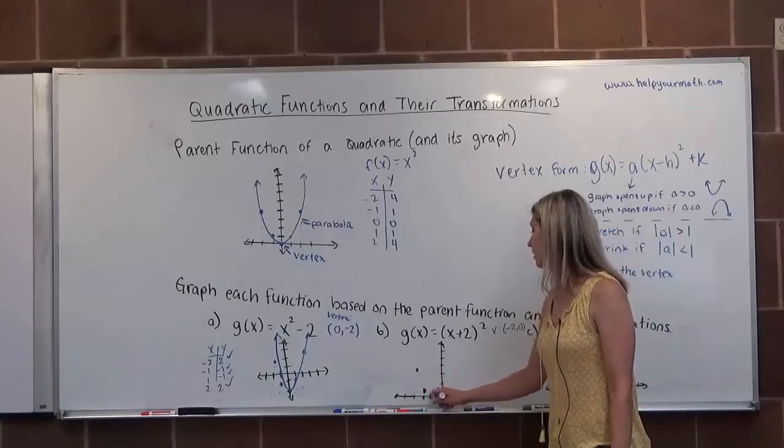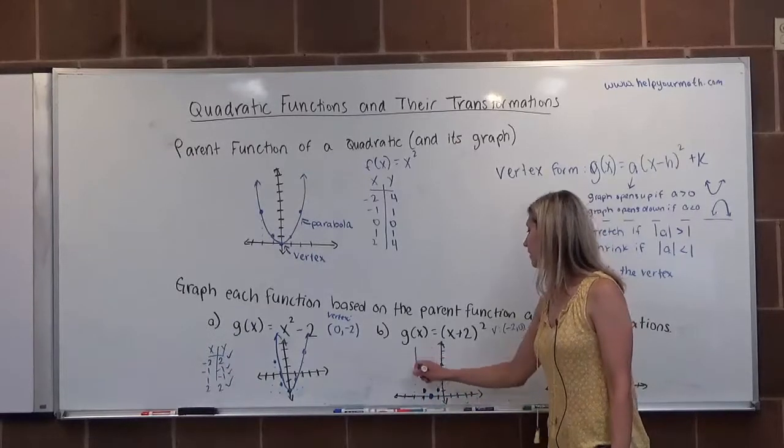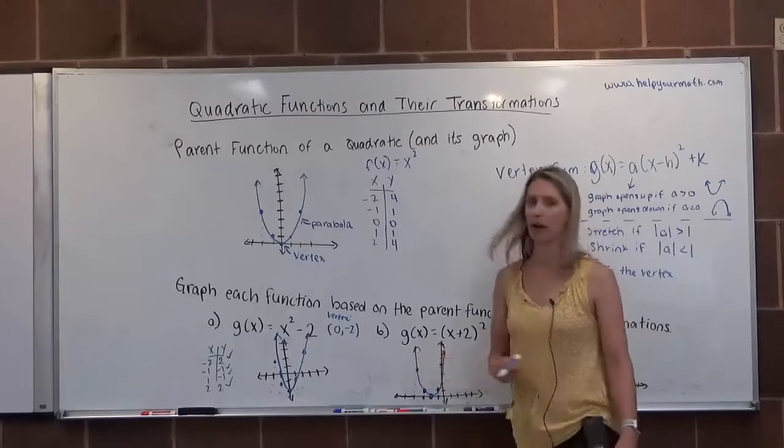I also know I can go 2 to the left and up 1, 2, 3, 4. 2 to the right and go up 1, 2, 3, 4. And then I can connect these to make a nice, smooth parabola.